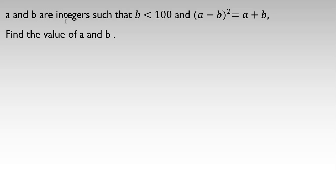A and B are integers such that B is less than 100, and A minus B squared equals A plus B. Find the value of A and B. So if I rewrite the first equation, I can say A minus B squared equals A plus B.